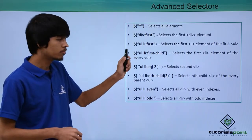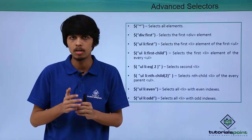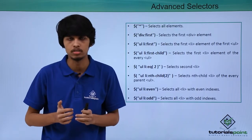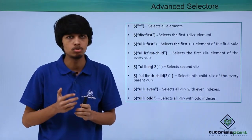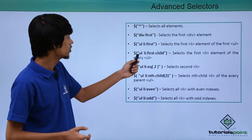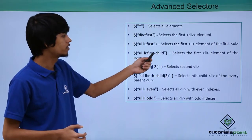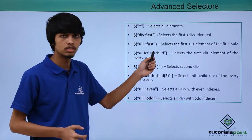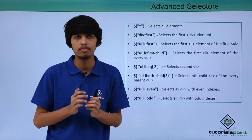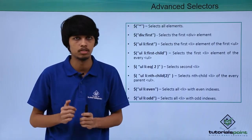Next, if we want to select the first list item of every unordered list encountered on the web page, then we can use :first-child. Here we have used dollar ul li :first-child, so this selects the first list item of every unordered list it encounters on the web page.